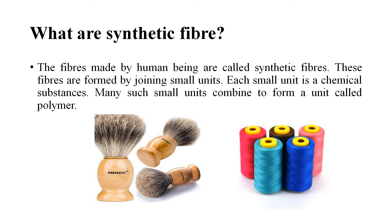Fibers made by human beings are called synthetic fibers. Synthetic fiber is a chain of small units joined together; each small unit is a chemical substance. Many such small units combine to form a large single unit called a polymer. The word polymer comes from two Greek words — poly and mer — where poly means many and mer means part. So a polymer is made of many repeating units.